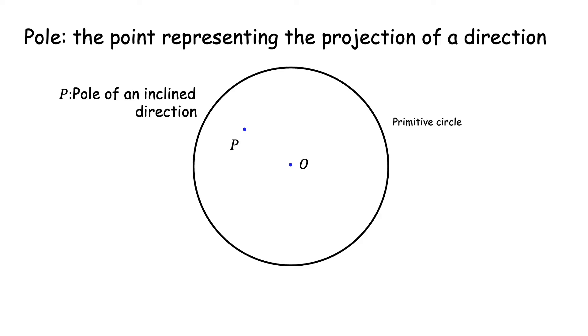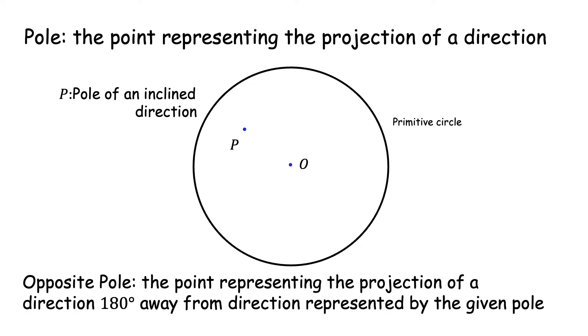Now, every direction will also have an opposite direction, a direction which is 180 degrees away from a given direction. The pole of the 180 degree away direction is called the opposite pole of the given pole. That is the definition of the opposite pole. The point representing the projection of a direction 180 degrees away from the direction represented by a given pole.